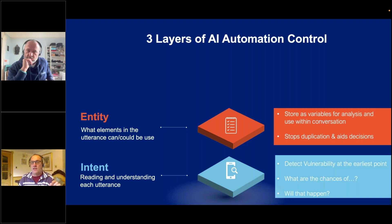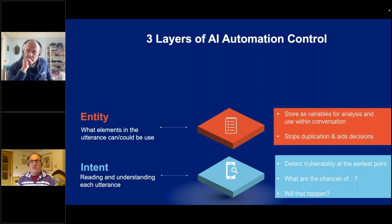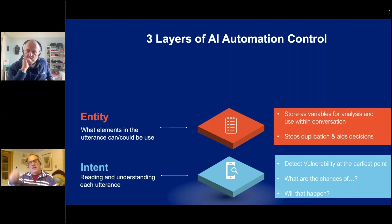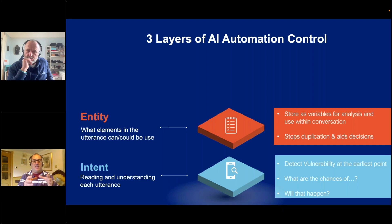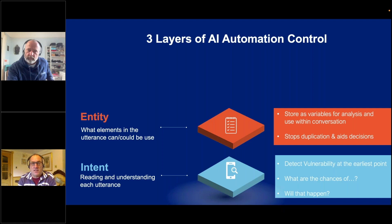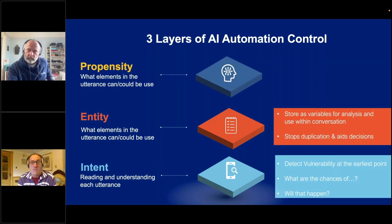There's an intent there — can't pay but looking to make a part payment — but there are also entities within that message. They mentioned their hours have been cut, which is worth capturing. They've offered 30 pounds, so I can extract that figure and store it against the customer's record. They said next Wednesday, so I can resolve that to an actual date — the fourth of December, for example — and use that information to make further decisions, either through AI automation or by agents themselves.